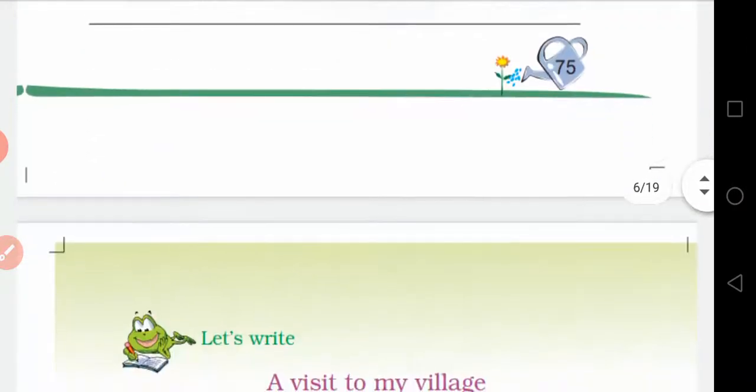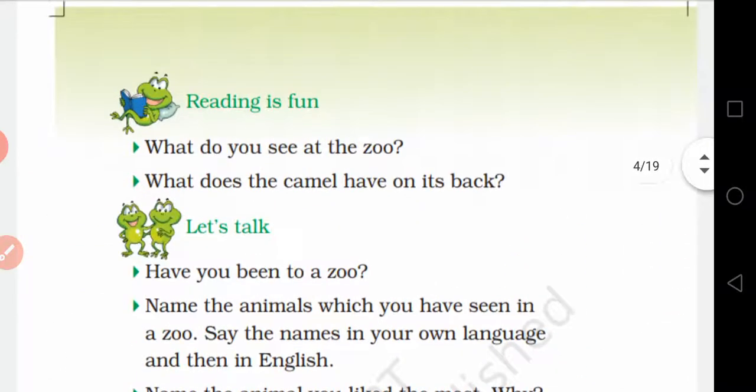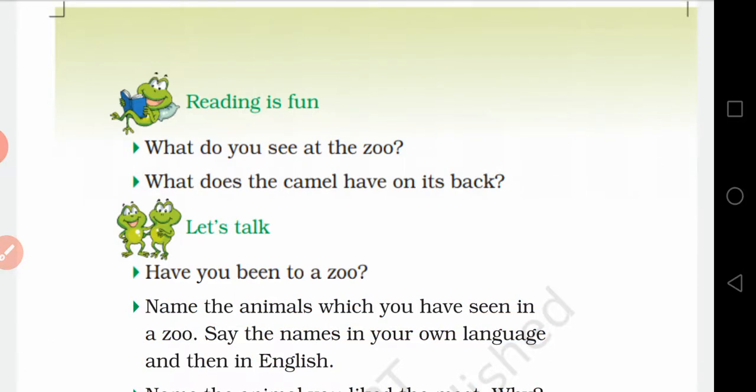Open page number 74 and look at Reading is Fun. What do you see at the zoo? The answer is: we see animals and birds at the zoo. What does the camel have on its back? The camel has a hump on its back.